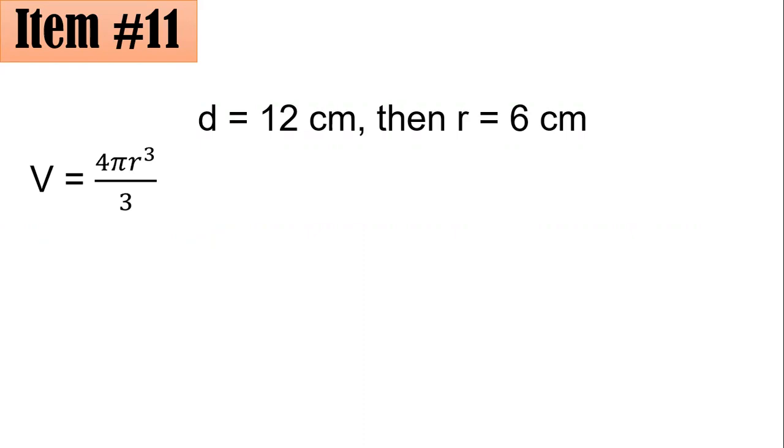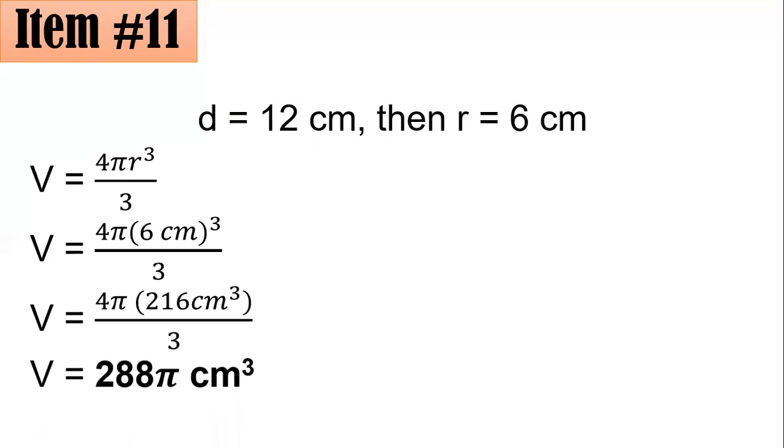This is the formula for the volume of a sphere. With r equals 6, so you could have 4 pi times 6 cm cube all over 3. 6 cm cube is 216 centimeters cube and simplifying this expression 4 pi times 216 all over 3 will give you 288 pi centimeters cube letter A.